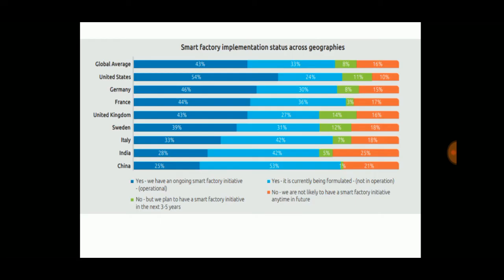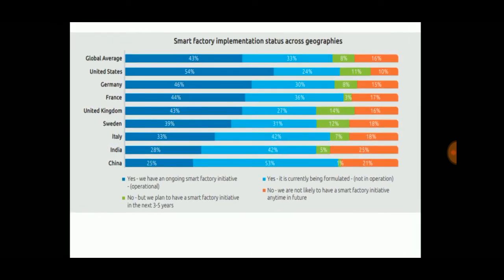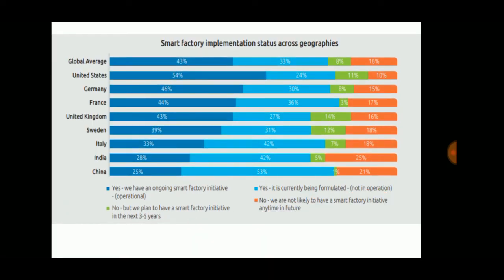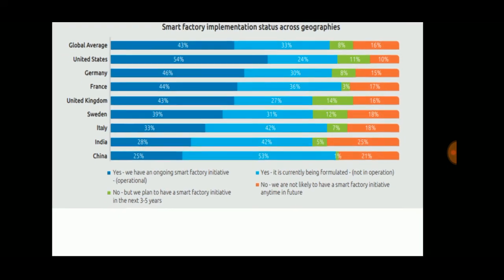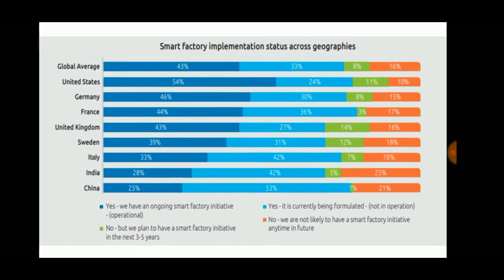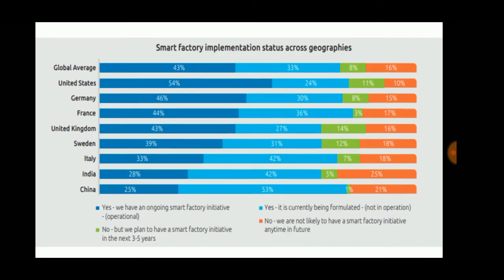Only a limited number of smart factories have been implemented so far. The global average is 43% ongoing adoption of Industry 4.0. The USA is the leading country at 54%. Color codes indicate status: green means planned for the next three to five years, orange means not planned at all, and 24% in the USA are currently being set up but not yet operational.